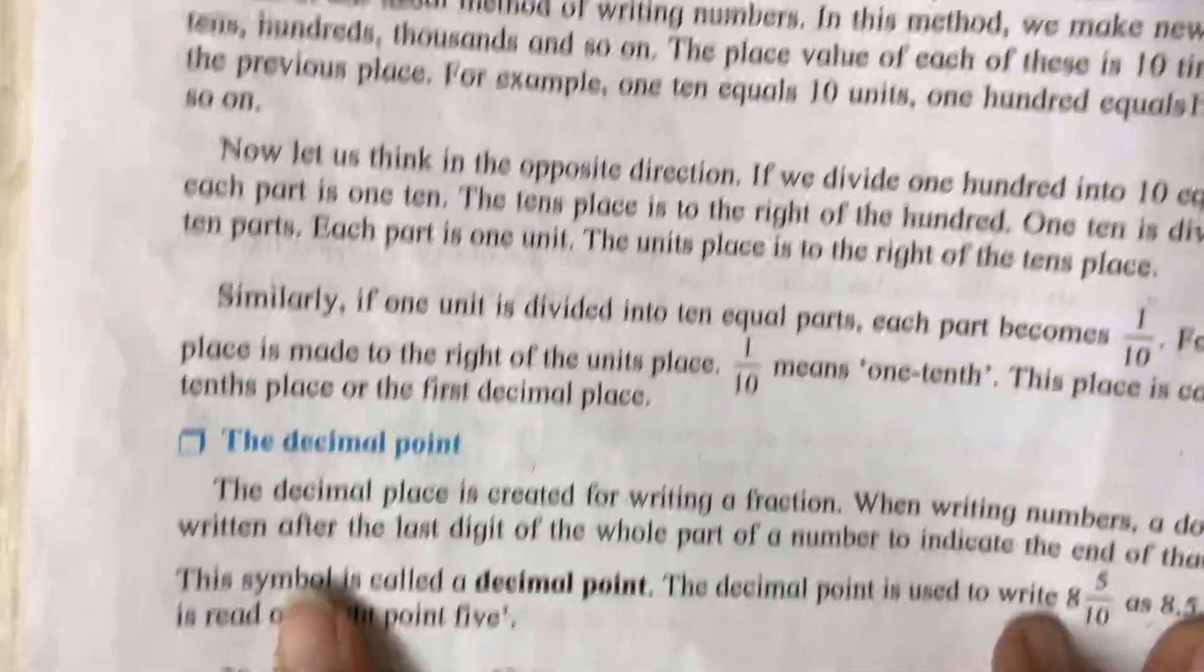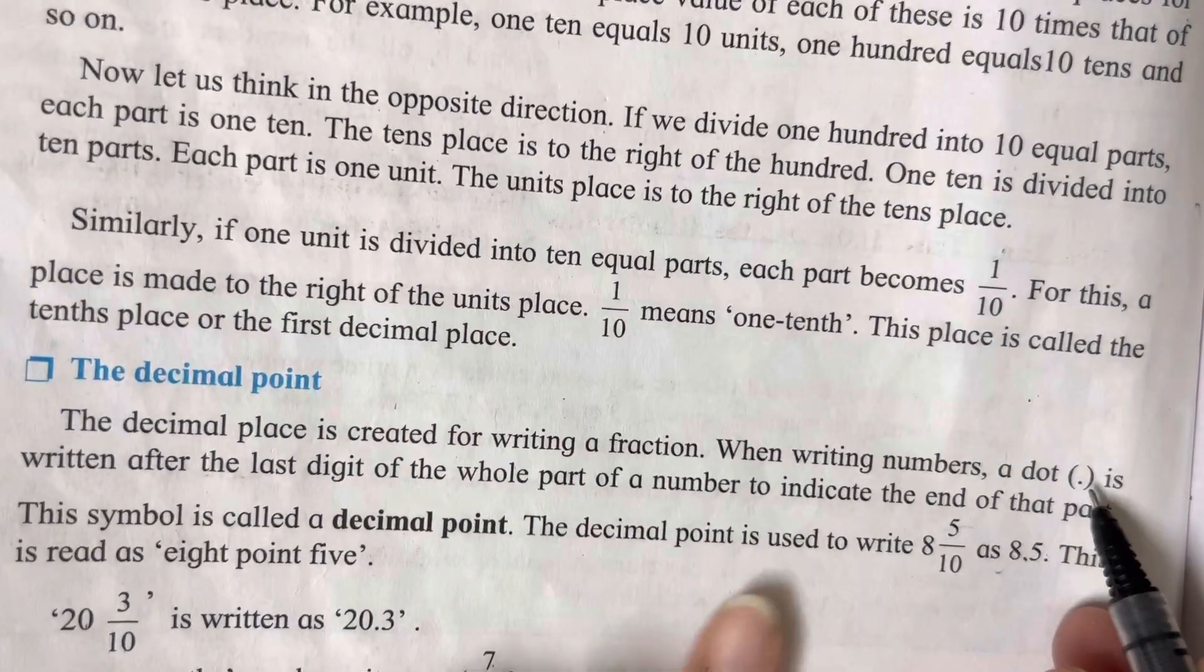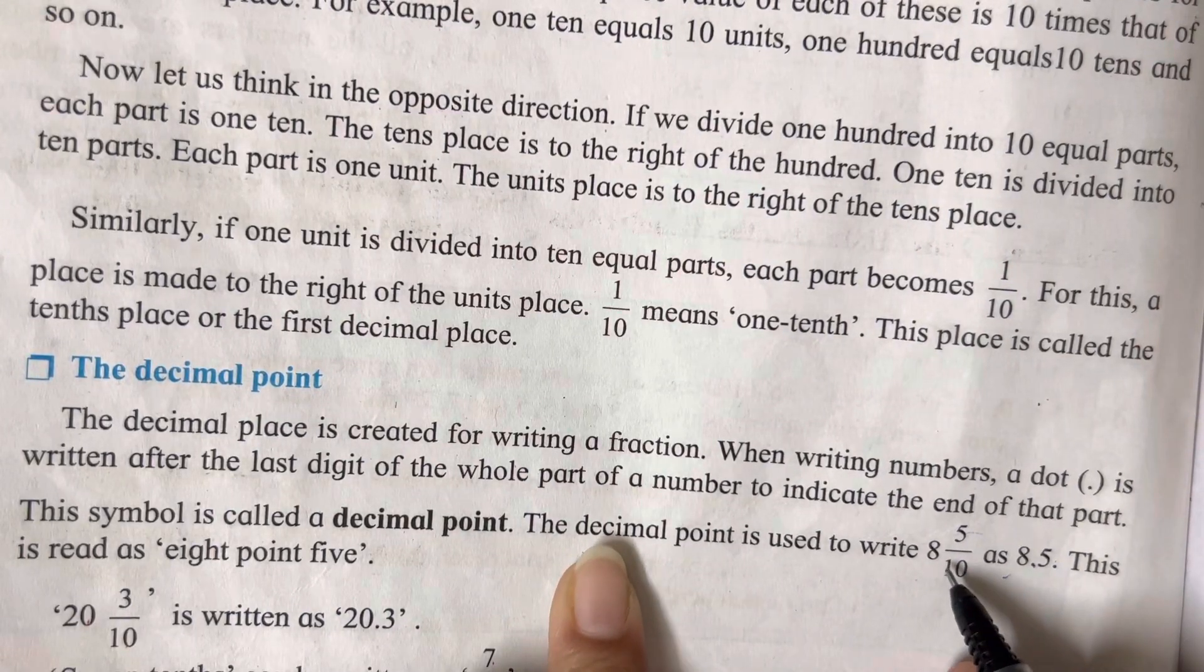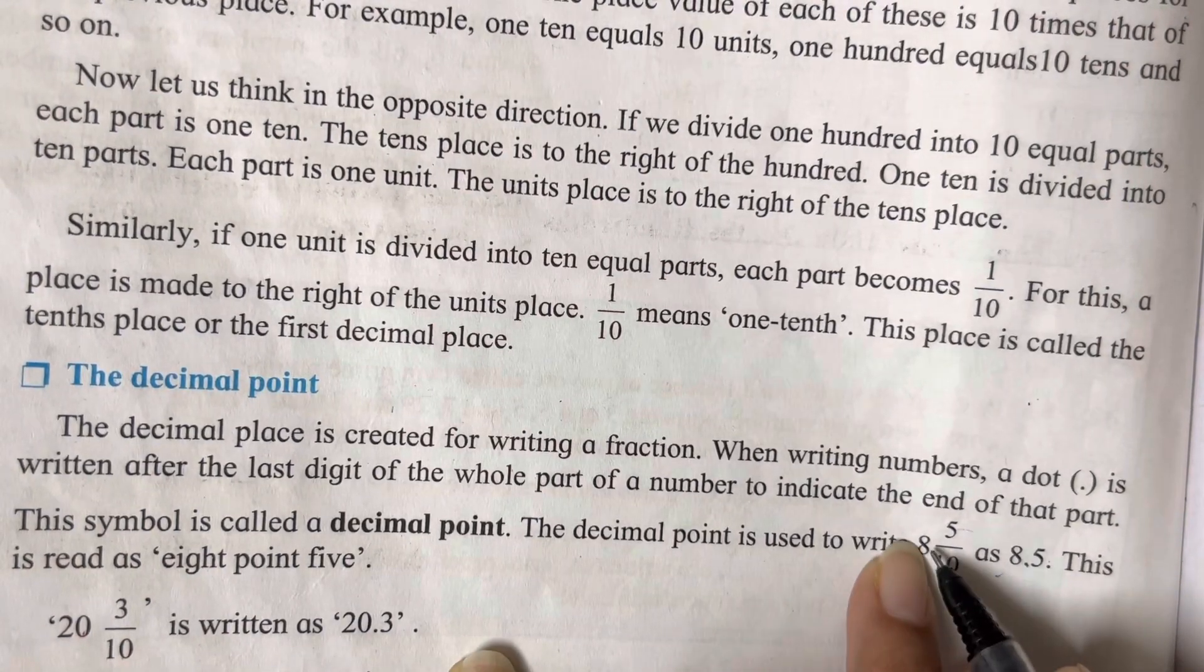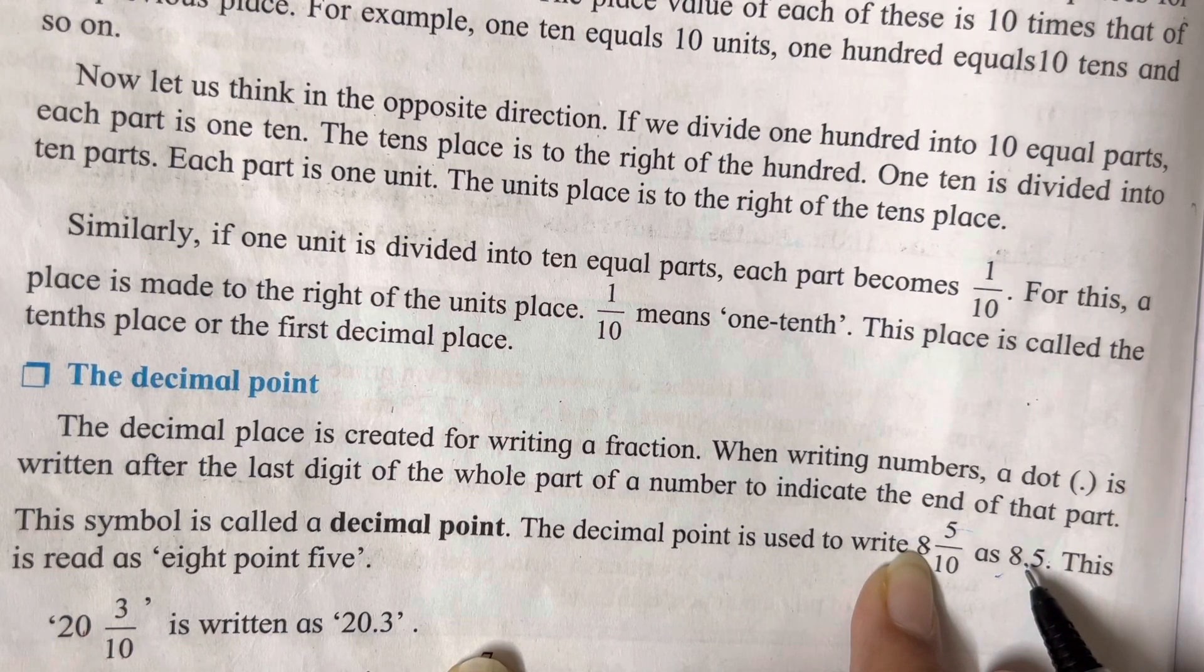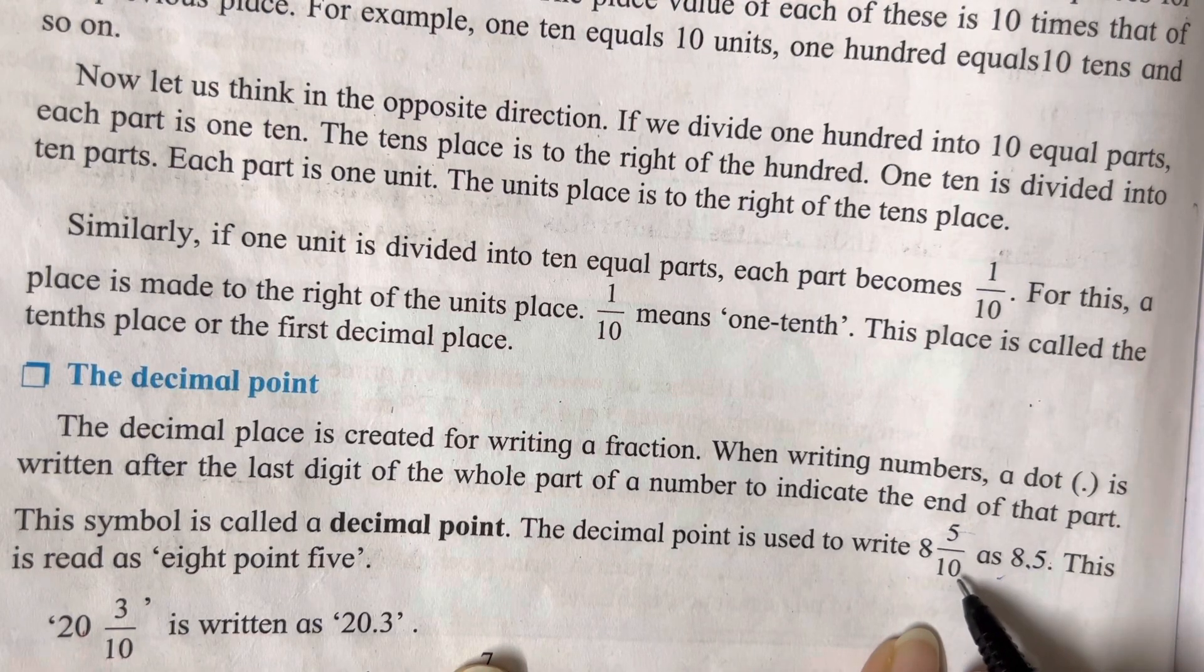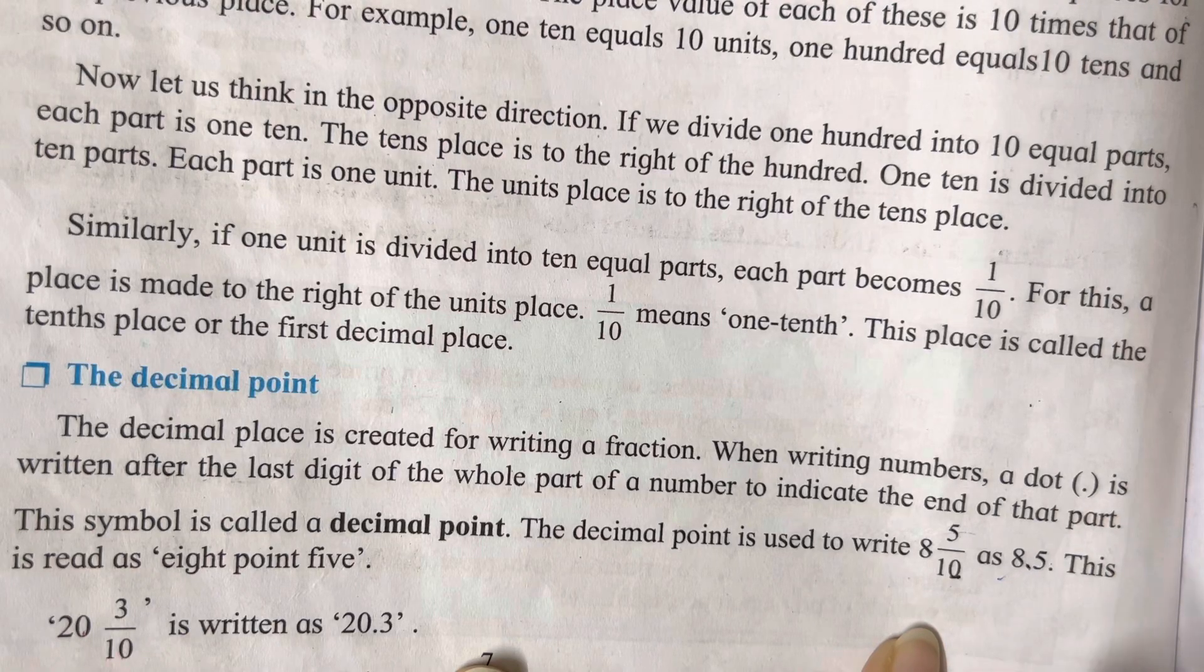Now what is our decimal point? This symbol is said to be a decimal point. Everyone knows what is a decimal point. The dot that has been given between two numbers is said to be a decimal point. So when a number has been given as 8 and 5 upon 10, what we have to do? 8 will come here before decimal point, decimal point lagana hai, then the first digit is going to be 5.